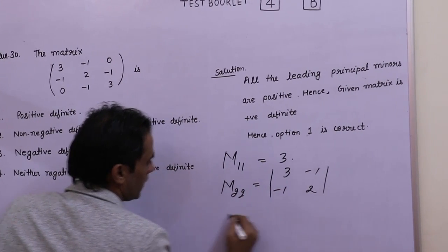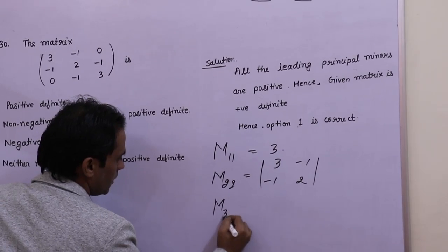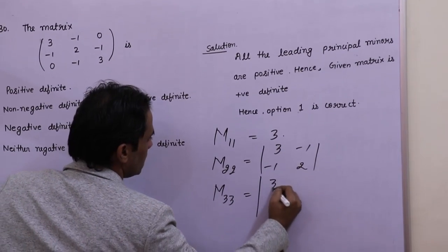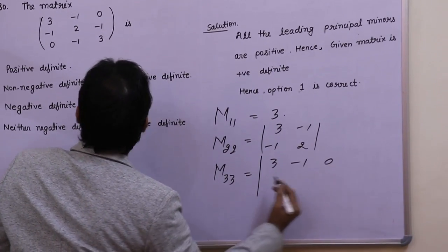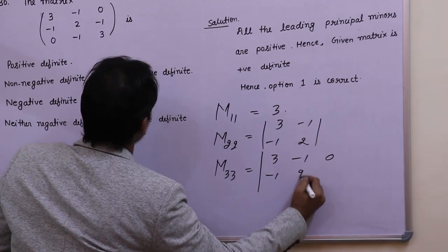And the third one is M33, which is the determinant of the given matrix: 3, -1, 0, -1, 2, -1, 0, -1, 3.